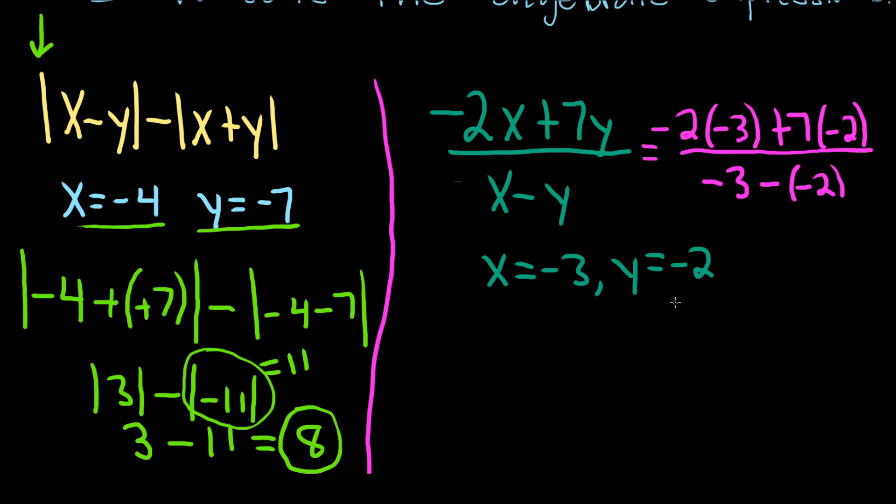Let's keep going here. I'm going to come down here. Be really careful. Let's see. Negative 2 times negative 3, that's going to give us a positive 6. 7 times negative 2, that's a negative 14. Good stuff.